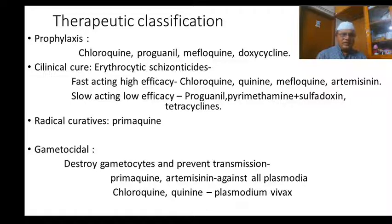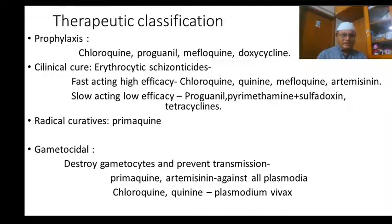Radical cure acts on the tissue schizont stage — that is, the pre-erythrocytic schizont stage. The drug for radical cure is primaquine. When treating malaria, we usually start with chloroquine as the first drug. If chloroquine-sensitive, chloroquine provides clinical cure, but for complete or radical cure, primaquine is needed because primaquine acts on the tissue stage.